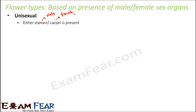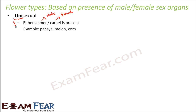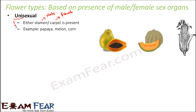Some flowers have only the male reproductive part or only the female reproductive part. It is not necessary that every flower has both stamen and carpel. Such flowers, which have only one of these two, are called unisexual — the word 'uni' means one.